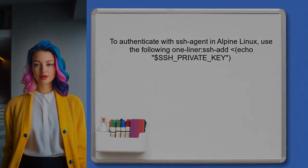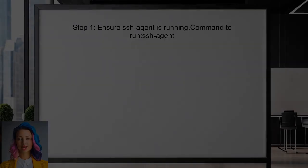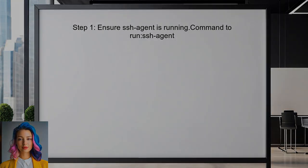To authenticate with SSH Agent in an Alpine Linux environment, the user can use a one-liner that utilizes process substitution. This is similar to the Bash command, but adapted for Alpine's shell. First, the user should ensure that the SSH Agent is running. This can be done by executing the command SSH Agent in the terminal.